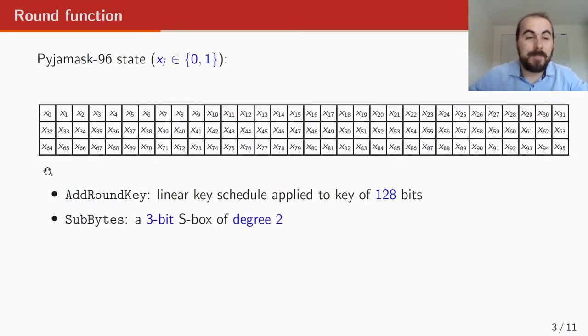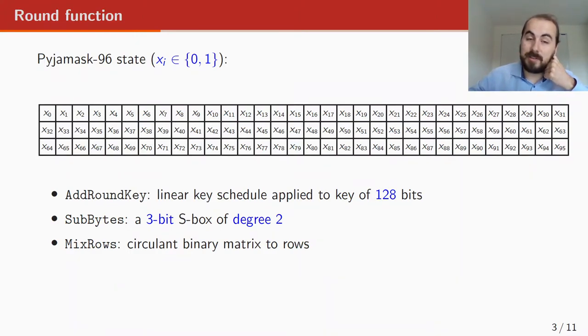Then you do a SubBytes layer where you apply a 3-bit S-box to each column. This S-box has degree 2 and its inverse also has degree 2 and that's important later. After that, you do the linear round, which is the MixRows. And it works by applying a circular binary matrix to each row in the state. And it adds quite some diffusion to the scheme. So you do this 14 times because PYJAMASK-96 has 14 rounds. And after the last round, we do one extra round key.